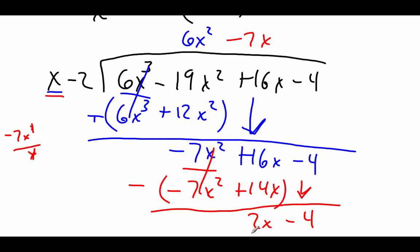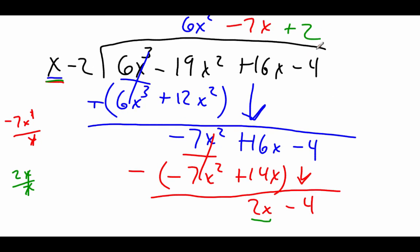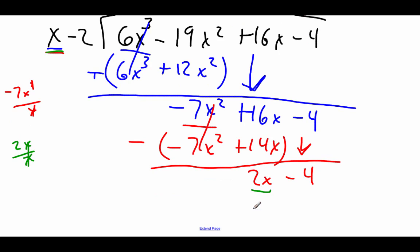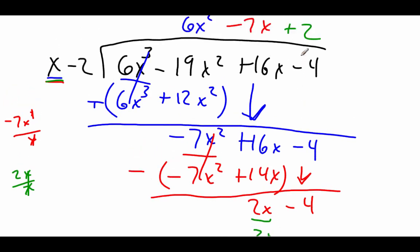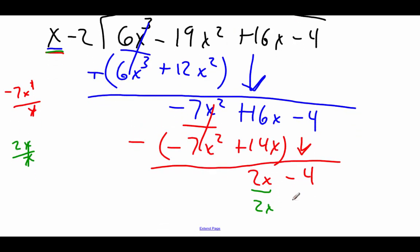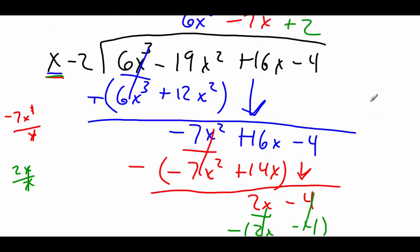We're almost done — only one more thing to look at. We take 2x and focus on our x. 2x divided by x: those x's cancel and we just have a positive 2 left over. So now 2 times x is 2x, and 2 times negative 2 is negative 4. We subtract: 2x minus 2x cancels out, and negative 4 minus negative 4 also cancels out. So we've just got a 0 left over at the end.